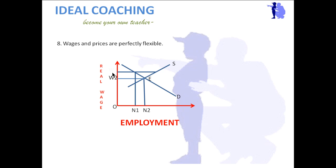Now suppose wages are higher than equilibrium — at W1 — employment will be lower. Pigou argued that at W1 there is a gap between supply and demand: supply of labor is high but demand is less, giving less employment. If wages are lowered, the condition of full employment could automatically be brought about by demand and supply functions without government intervention.